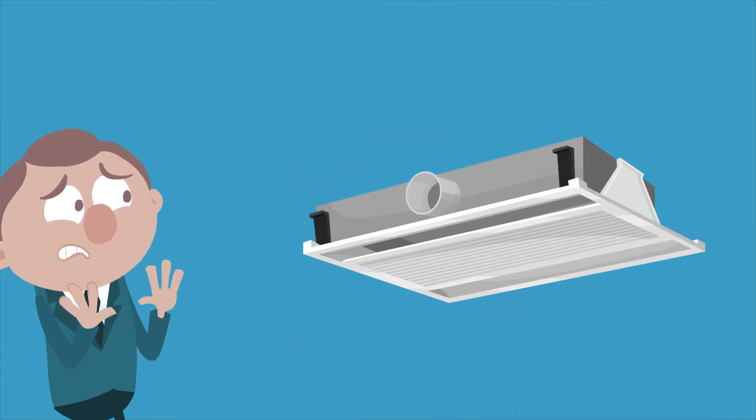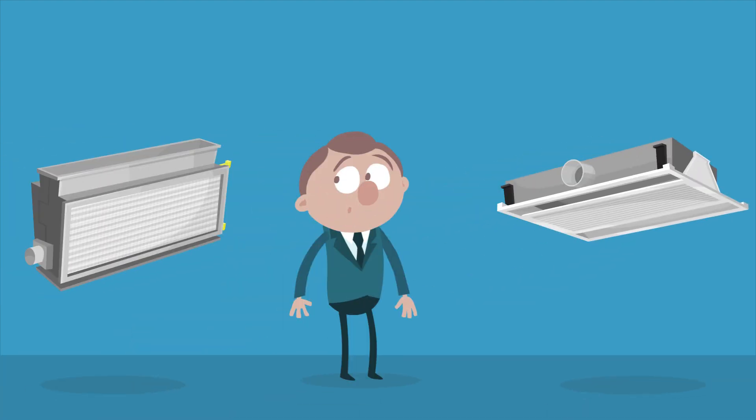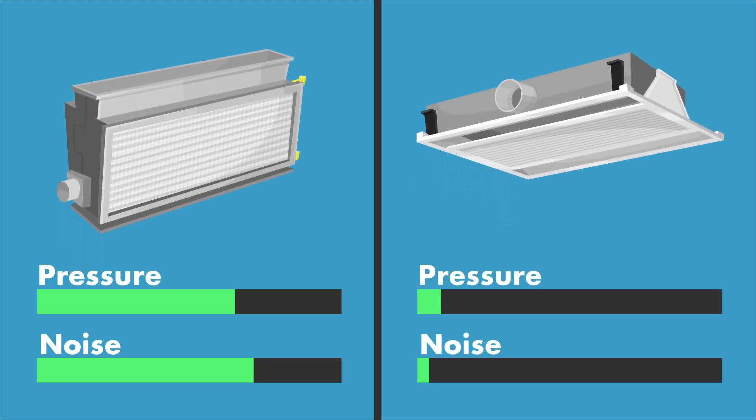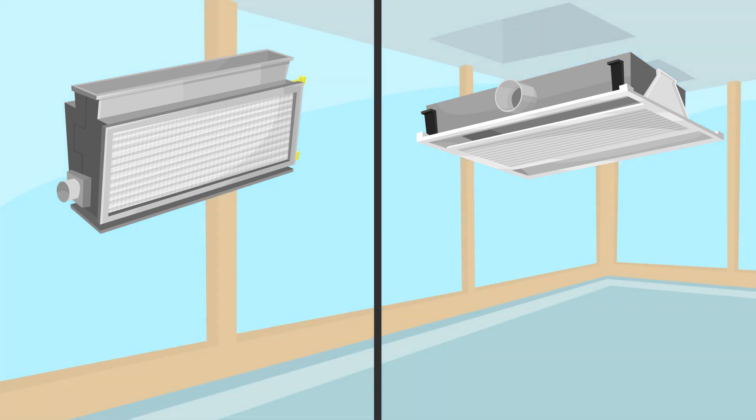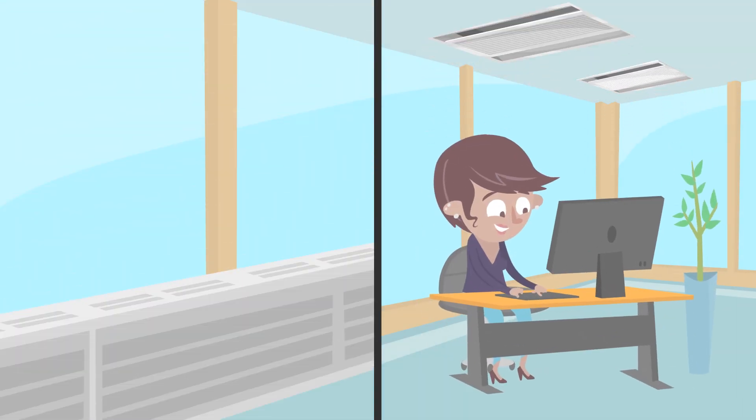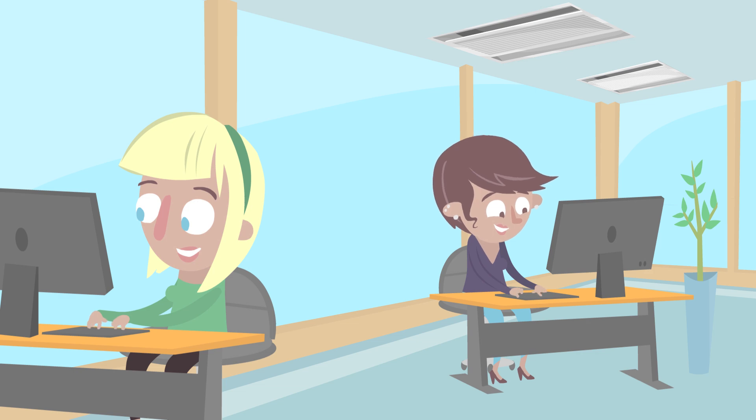At first, Albert was skeptical about active beams, until he realized that the technology is similar to perimeter induction units, which were commonly used until the mid-70s. Engineered to run at lower pressure and noise levels, and designed to fit into the ceiling, active chilled beams have all of the reliability and none of the drawbacks of the old PIU systems.